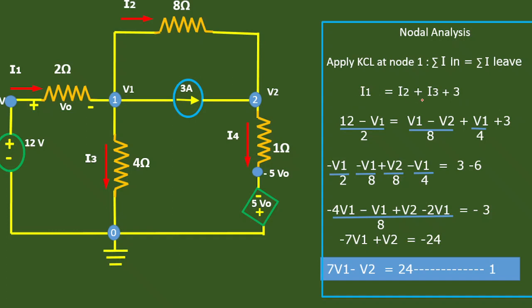For I1, I2, and I3 we apply Ohm's law. For I1 we write this as (12 minus V1) divided by 2 ohms. For I2 it is (V1 minus V2) divided by 8 ohms. And I3 is V1 minus 0 divided by 4 ohms, which gives V1 over 4, plus 3.